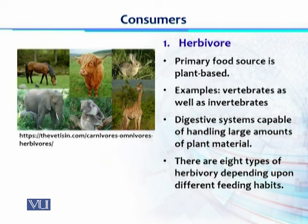The digestive system of primary consumers, or herbivores, is capable of handling large amounts of plant material. As we know, plant material is made up mostly of fibers and cellulose, so their stomach or the whole gut is adapted to digest this major component — cellulose — consuming, degrading, and extracting a large part of energy from plant sources.